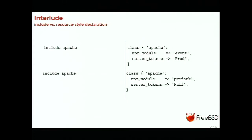On the other hand, if you use resource-style declaration and declare class { apache: mpm_module => 'event', server_tokens => 'prod' } and then elsewhere declare class { apache: mpm_module => 'prefork', server_tokens => 'Full' }, Puppet will fail — because you can't configure two resources of the same type with the same name. You can't configure Apache to use both event and prefork MPMs. Even if you use exactly the same parameters twice, Puppet will not allow it.